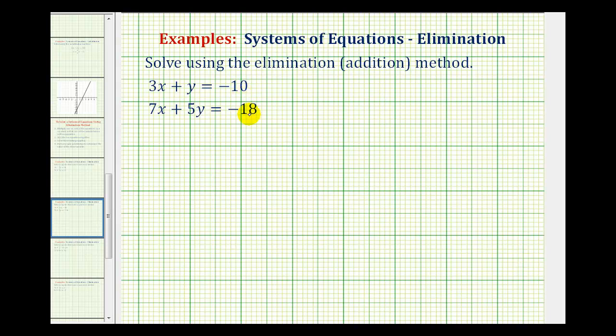We want to solve the system of linear equations using the elimination method or the addition method. A solution to a system of equations is an ordered pair, an x and y value that would satisfy both of the given equations. The idea behind the elimination method is we want to add these two equations together and when doing so eliminate one of the variables.